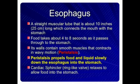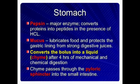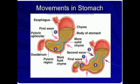The cardiac sphincter relaxes to allow food into the stomach. In the stomach, first is pepsin — the major enzyme — which converts protein into peptides in the presence of HCl. Second is mucus, which lubricates food and protects the stomach lining from strong digestive juices. Third, the stomach converts the bolus into a liquid after 4 hours of mechanical and chemical digestion. Fourth is chyme — chyme passes through the pyloric sphincter into the small intestine.